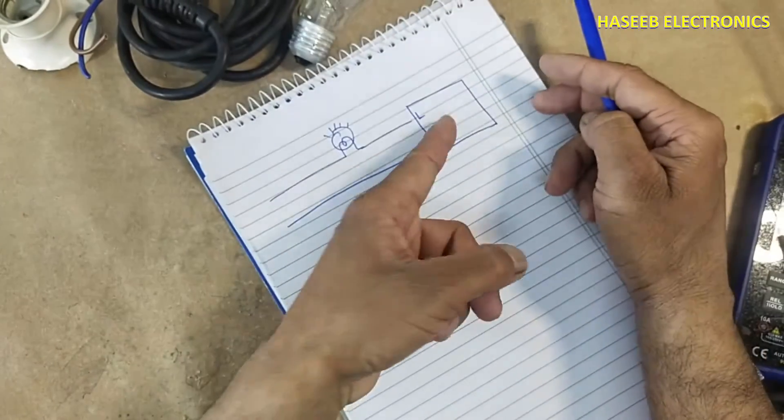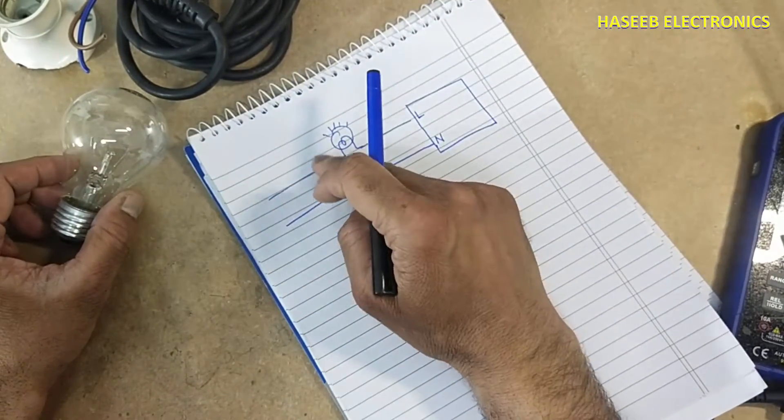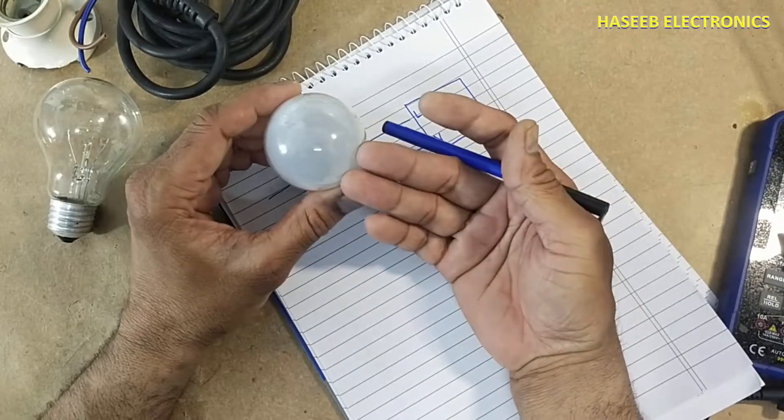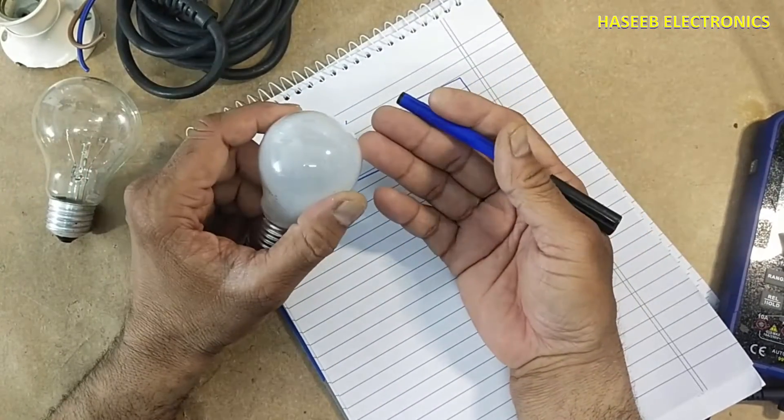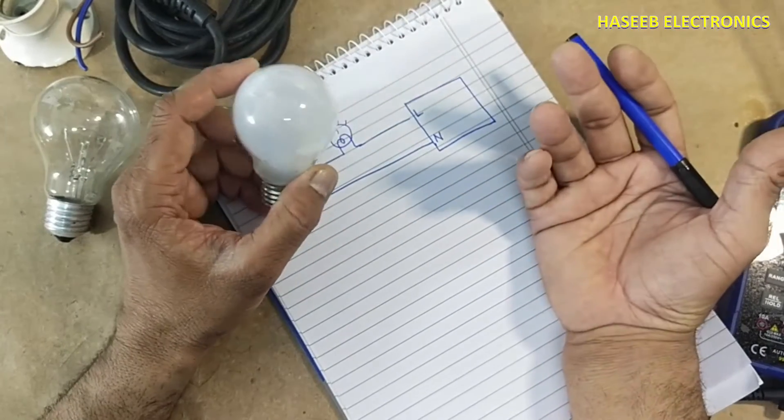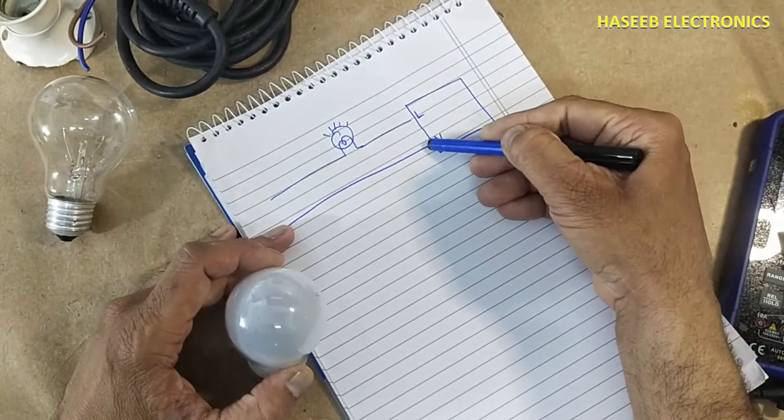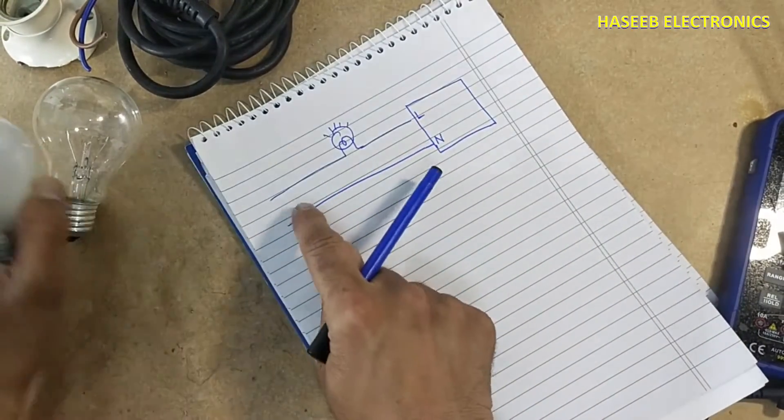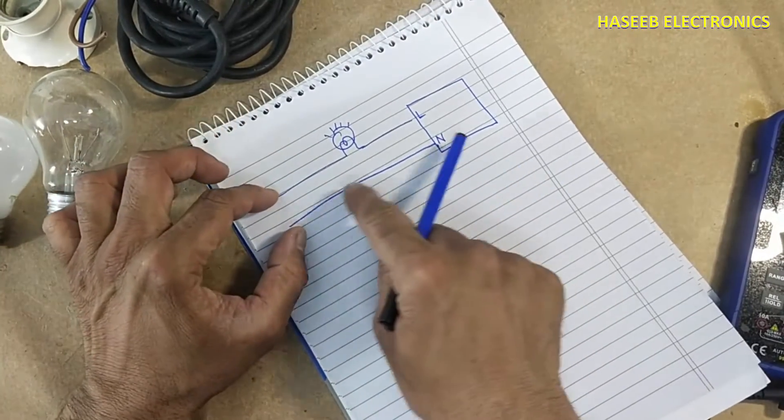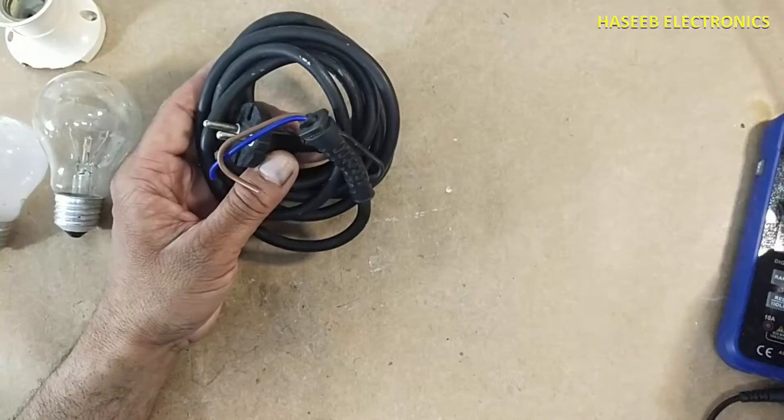When the circuit draws normal current, it will provide a series load but won't block the current. A 100-watt lamp provides approximately 300 milliampere current - not a heavy amount. If the circuit becomes short-circuited, we won't create a short link at line and neutral. At that time, the circuit will close from here and the lamp will glow fully.